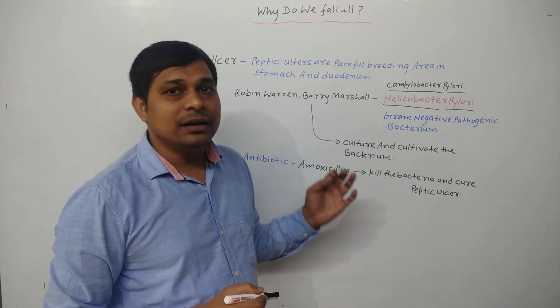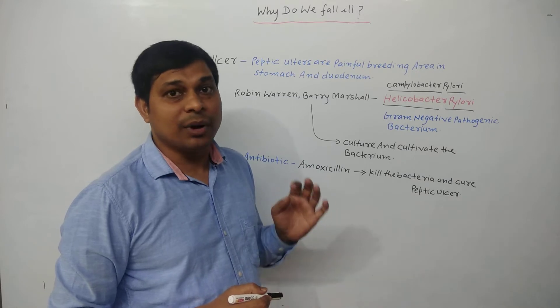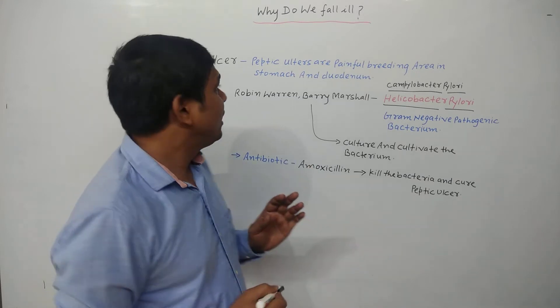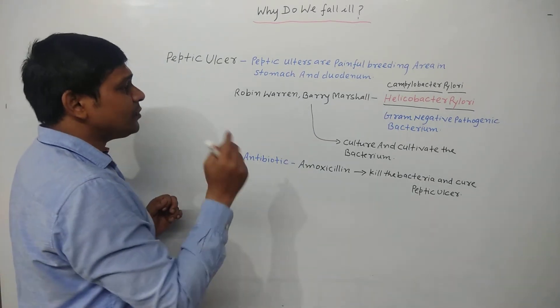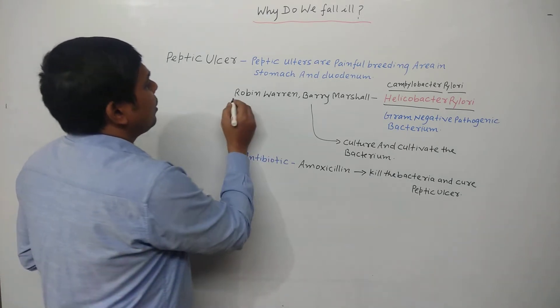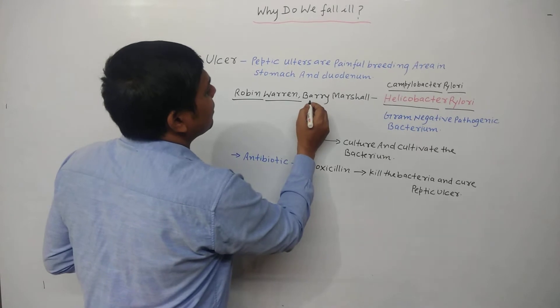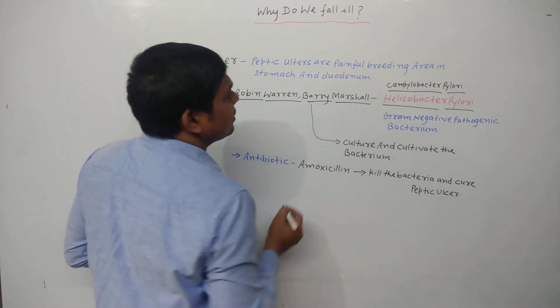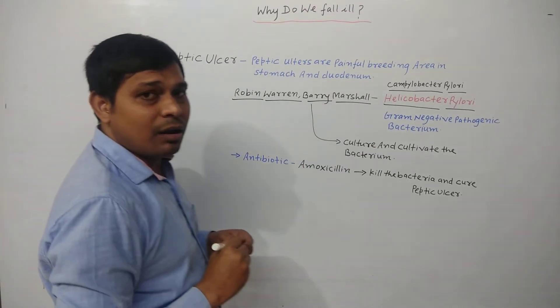Campylobacter pylori or Helicobacter pylori causes the peptic ulcer. Peptic ulcer is the painful bleeding area in the stomach and duodenum of the small intestine. Two Australians, Robin Warren and Barry Marshall, observed this.